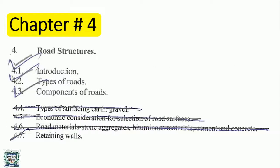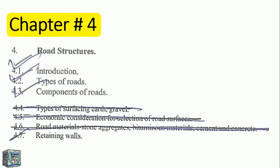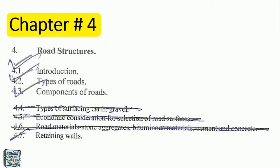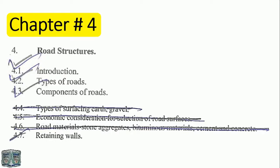Chapter 4: Road Structure. Topics include types of surface — earth, gravels — and economic consideration for selection of road surface. Allowed materials include stone aggregate, bituminous materials, cement, and concrete.